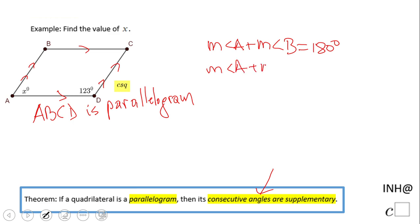In this problem, we have x (measure of angle A), 123 (measure of angle D), and 180. So we need to subtract 123 from 180, and we have x equals 57.